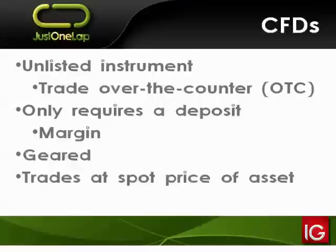CFDs trade at the spot price of the underlying asset. This is part of the simplicity — it's not a futures contract where interest and dividend assumptions are built in, creating a different futures price. The CFD trades at that spot price. For example, if NASPAS is trading at 830 rand, you will trade the CFD at that same price, with associated costs we'll touch on shortly.